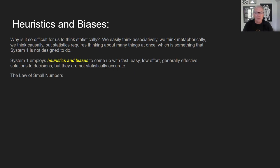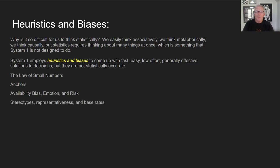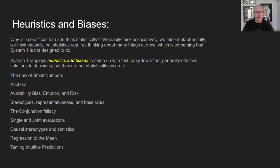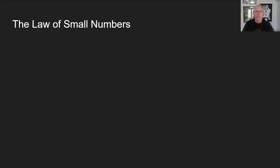Kahneman covers several topics in this section: the law of small numbers, anchors, availability bias, emotion and risk, stereotypes, representativeness and base rates, the conjunction fallacy, single and joint evaluation, causal stereotypes, statistics, regression to the mean, and taming intuitive predictions. This first part of the lecture will cover about half of those.